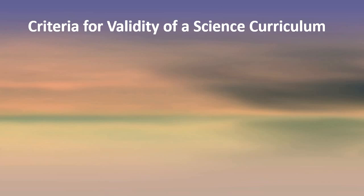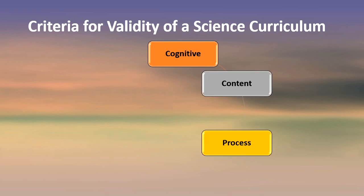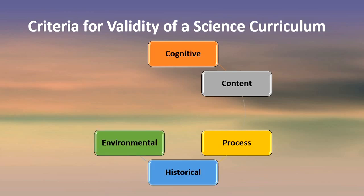How can we frame the criteria for a science curriculum? The National Curriculum Framework 2005 talks about six types of validity to ensure what should be in the science curriculum. The first is cognitive validity, the second is content validity, the third is process validity, then historical validity, then environmental validity, and the last is ethical validity.